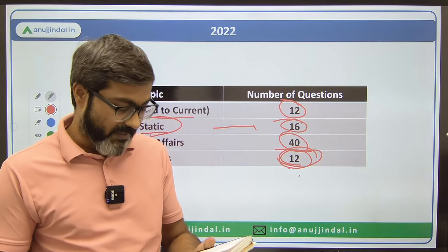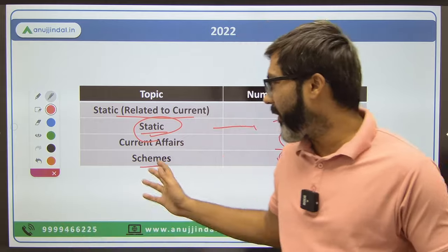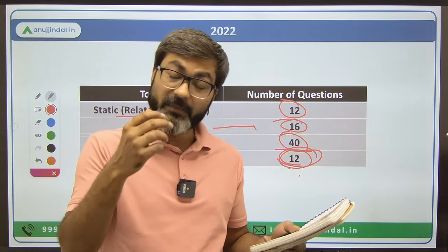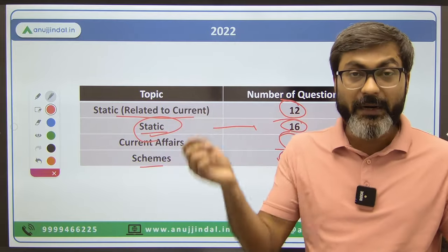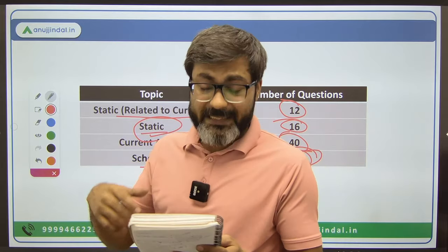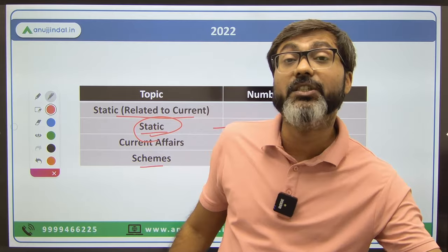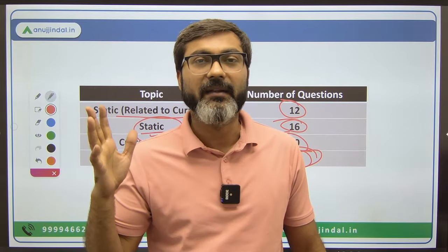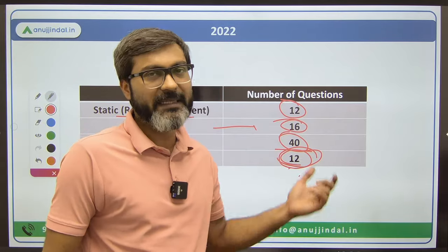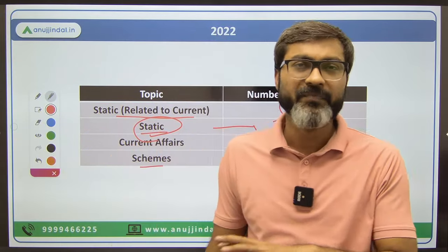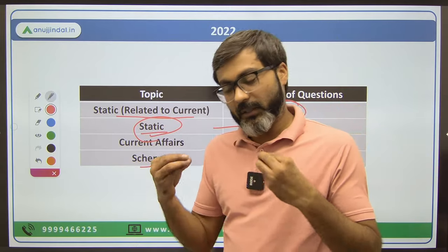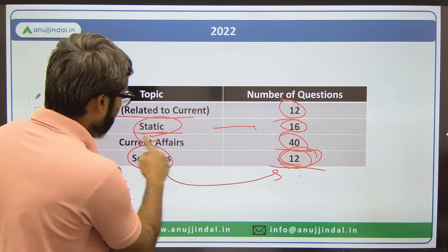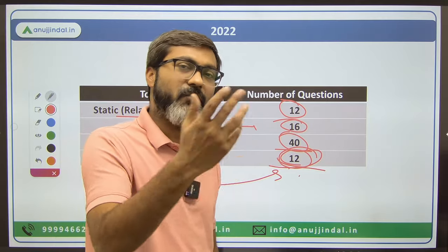Static questions in 2022 included things like: when was the Federal Reserve established, what is the ownership ratio in Regional Rural Banks between state, centre and the sponsored bank, what is the relationship between bond yield and its price, and what is the eligibility of a bank customer to be insured under DICGC. Finance static and SDG-related questions also appeared. The number of scheme questions and finance static questions were clearly increased.